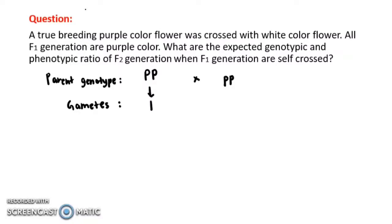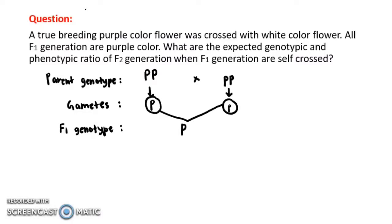So the gamete for the homozygous dominant parent is P, and for the homozygous recessive parent the gamete is p. When you cross these gametes, the genotype of F1 will be Pp. The F1 phenotype will be all purple color flowers.